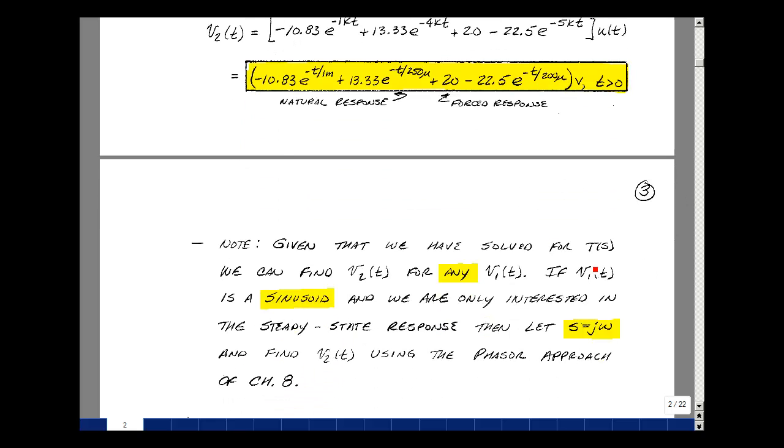One last comment. Given T(s), we can solve for any v2(t) given an input. If the input's a sinusoid and all we care about is a steady state response, then you can just plug in s equals j omega. We could find v2(t) just using our phasor approach of chapter 8. If you want the complete response, we're able to find it here by using the Laplace transform and then the inverse transform.